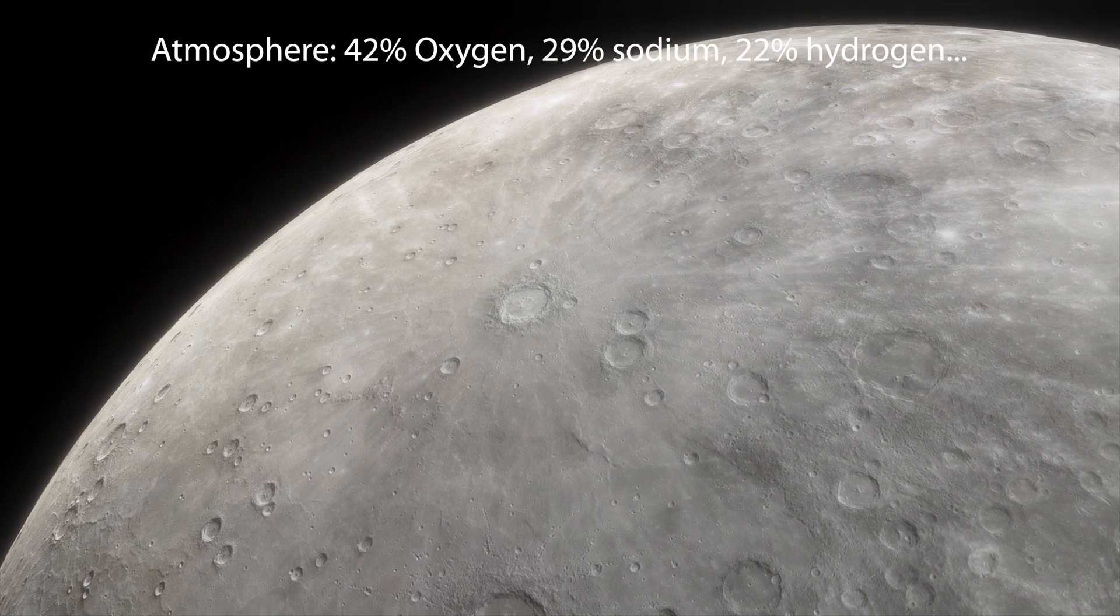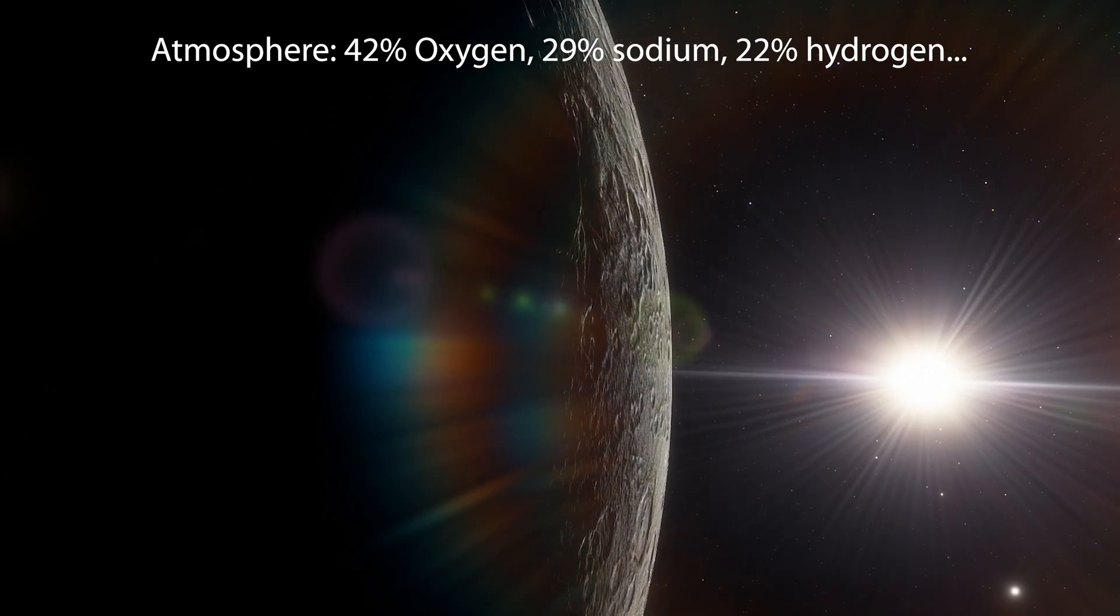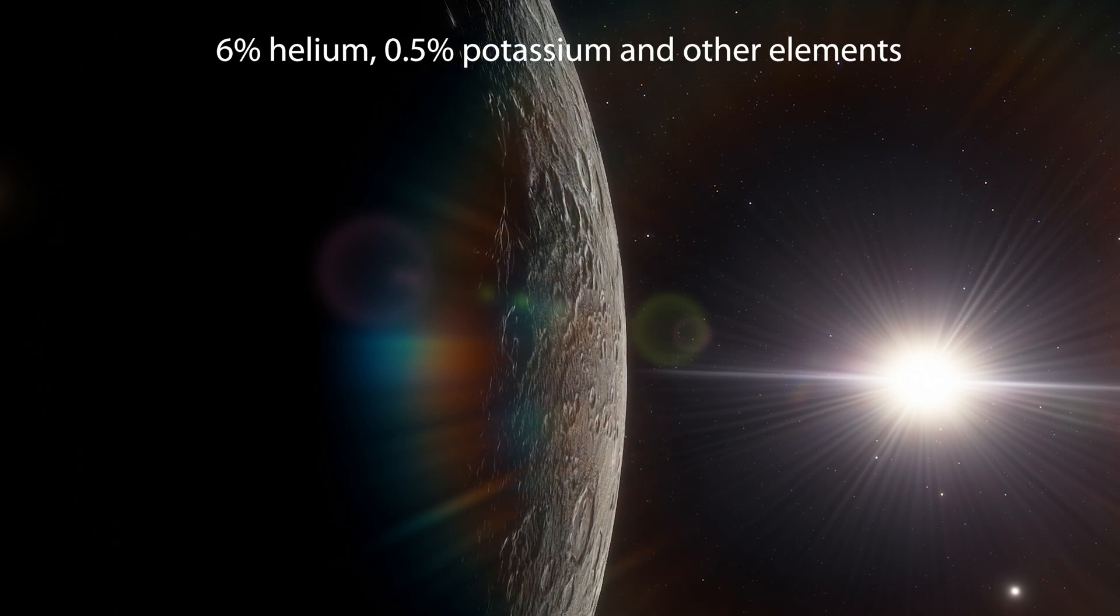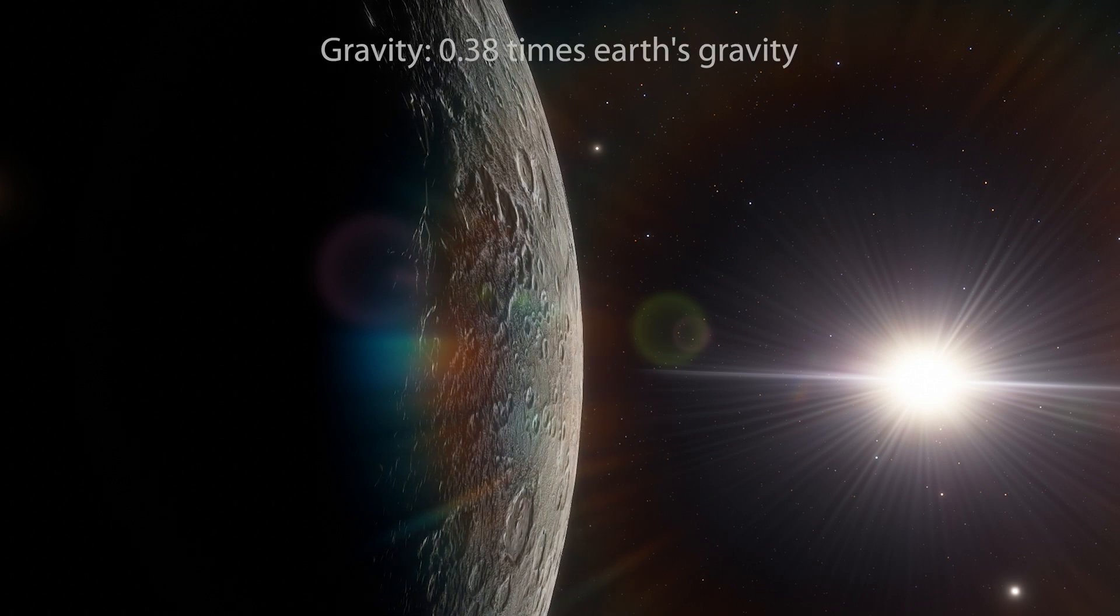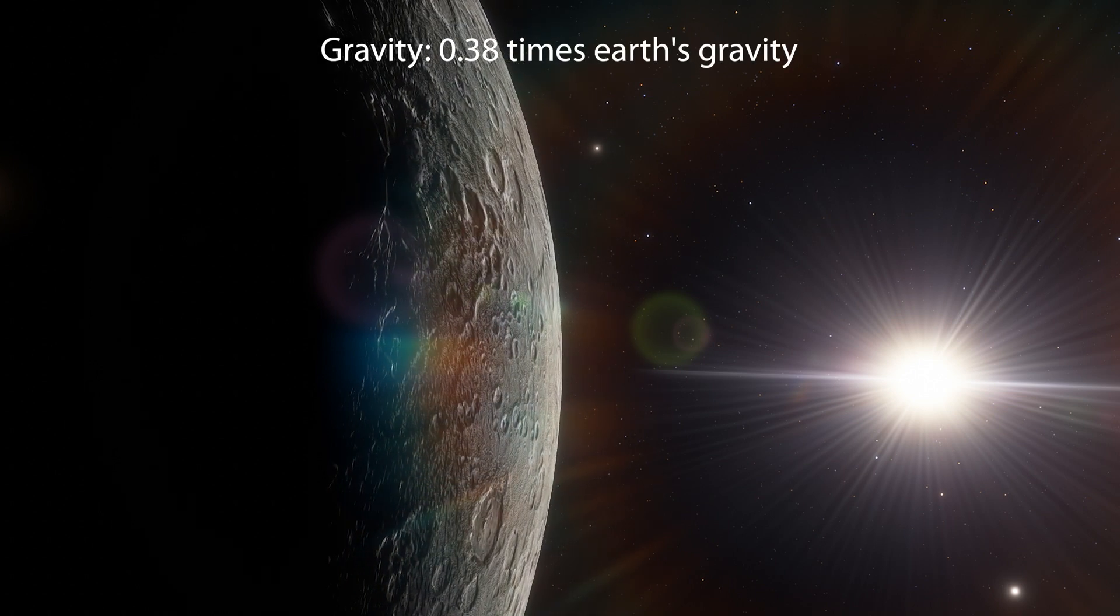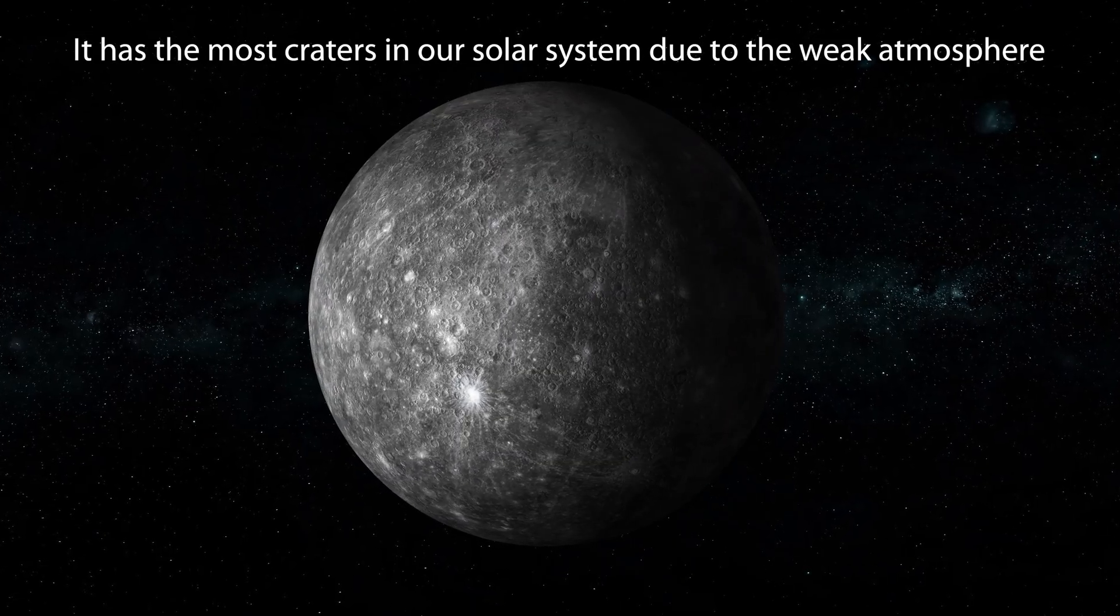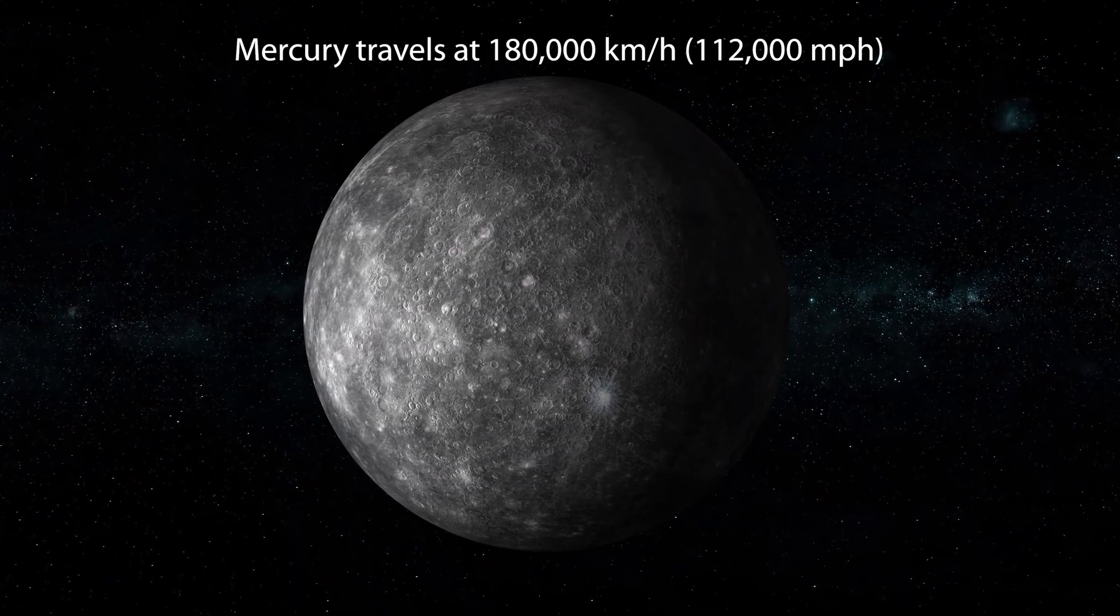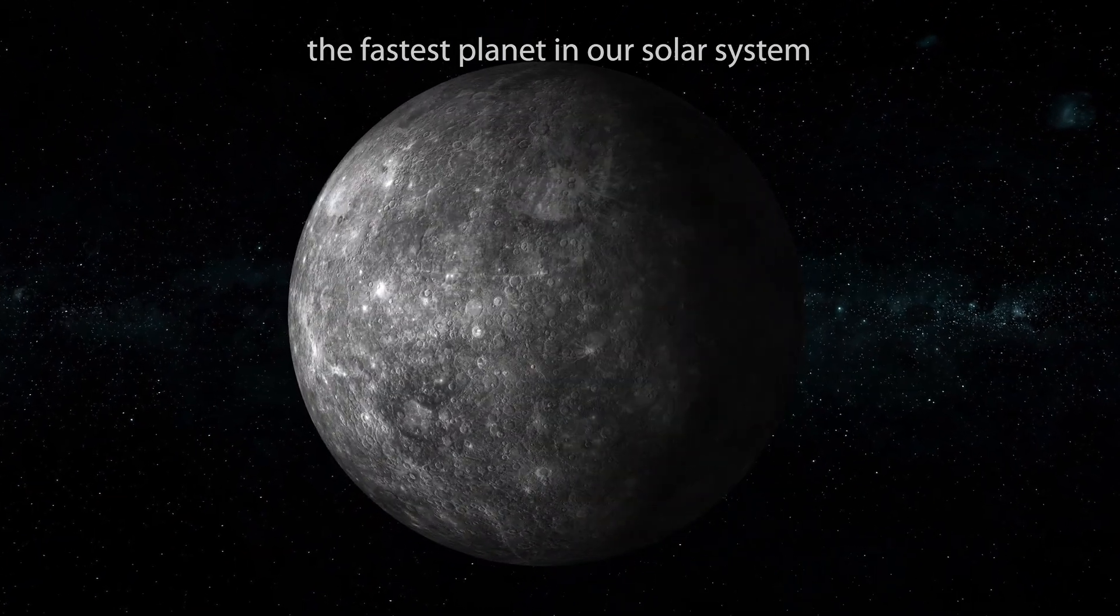The atmosphere on Mercury is made up of 42% oxygen, 29% sodium, 22% hydrogen, 6% helium, half a percent potassium and other elements. The gravity on Mercury is 0.38 times Earth's gravity. It has the most craters in our solar system due to the weak atmosphere. Mercury travels at 112,000 miles per hour, making it the fastest planet in our solar system.